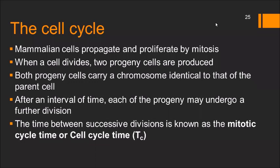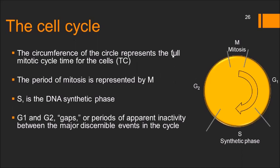Mammalian cells propagate and proliferate by mitosis. When a cell divides, two progeny cells are produced, both carrying chromosomes identical to the parent cell. The time between successive divisions is known as the mitotic cell cycle time. The circumference of the circle represents a full mitotic cycle. The period of mitosis is represented by M, the DNA synthetic phase by S, and G1 and G2 are the gaps — periods of apparent inactivity between the major events of mitosis and the synthetic phase.